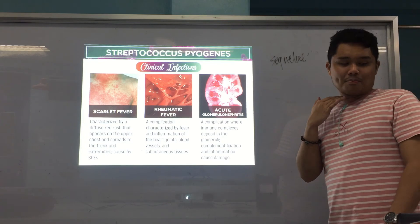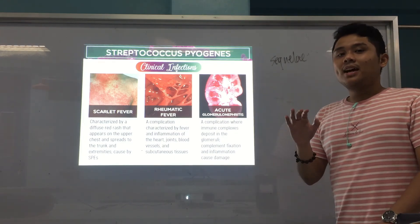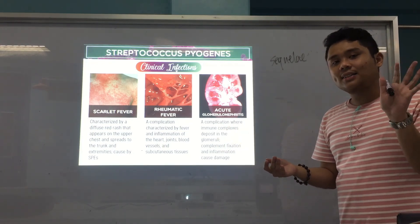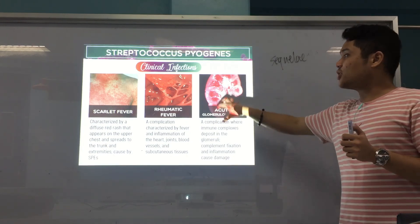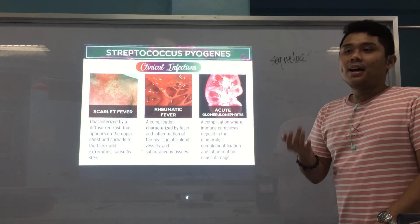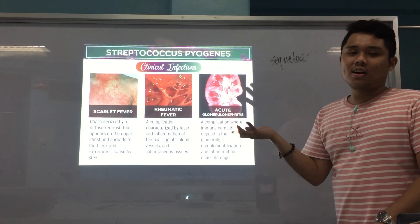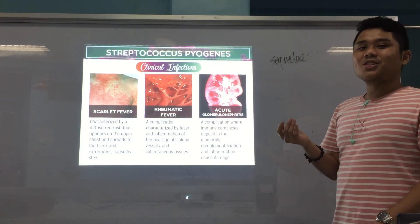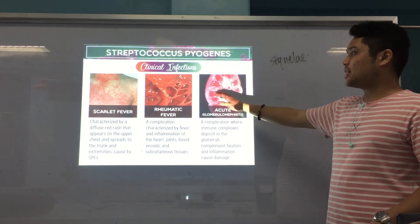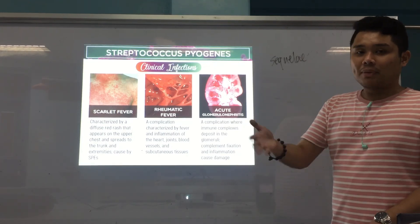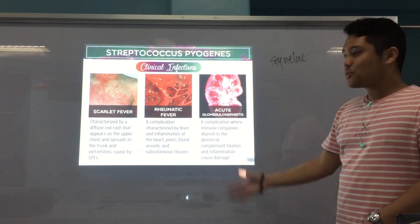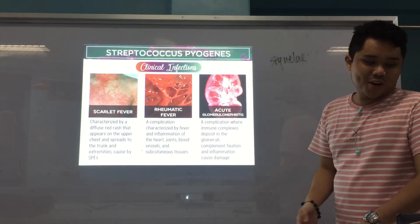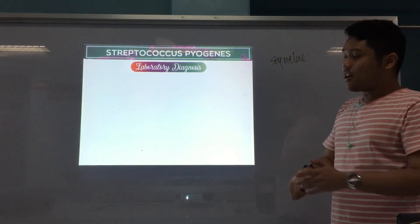Acute glomerulonephritis can follow either a throat or skin infection by Strep pyogenes. Immune complexes — antibodies reacting to Strep antigens — are deposited in the glomerulus. These trigger the complement system and other immune responses, which damage the glomerulus. The immune system attacks the area where the immune complexes are deposited, resulting in glomerulonephritis.